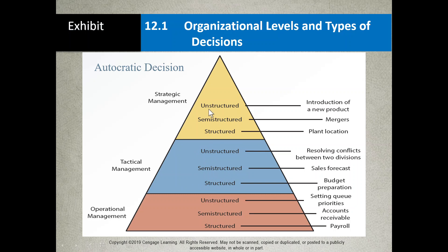To recap: you've got S for strategic — the top, the CEOs and top management. Then you've got the working managers, the department managers. Then you've got the operational people who run the majority of daily tasks in managing information systems. Within each of those, of course, you've got your three levels of decision structures. That's probably enough for this video — I'll stop here and see you in part two.